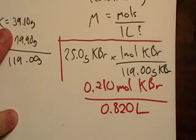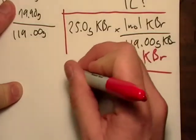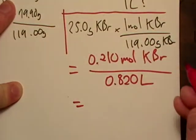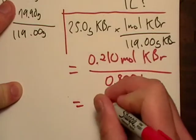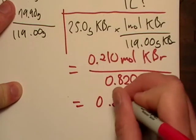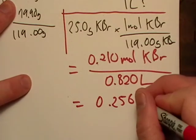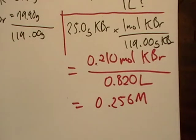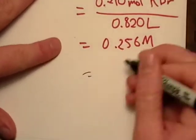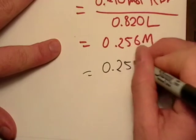Now it's just a division problem. Looks like what we got, three significant figures. Okay, so we got 0.256 M, which just means there's 0.256 moles in one liter.